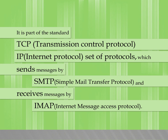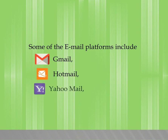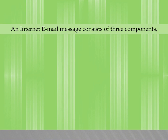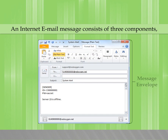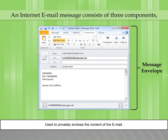Email receives messages by IMAP — Internet Message Access Protocol. Some of the email platforms include Gmail, Hotmail, Yahoo Mail, etc. An internet email message consists of three components: the message envelope, used to privately enclose the content of the email.